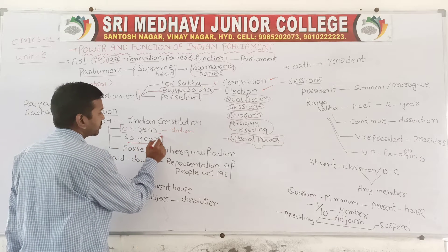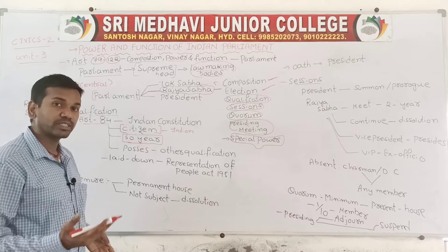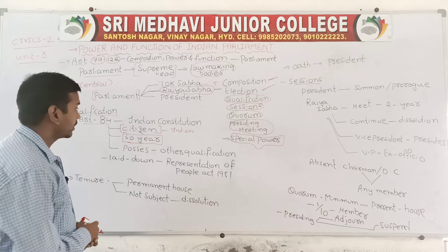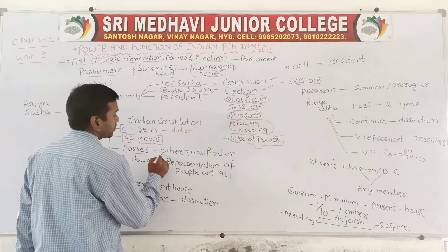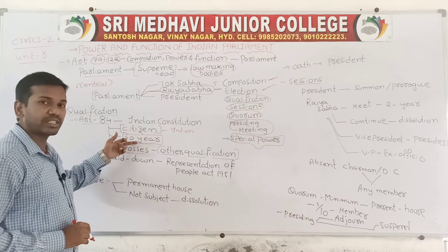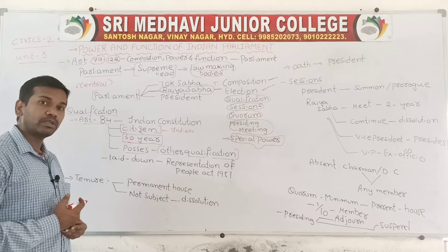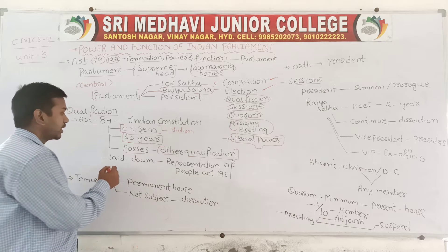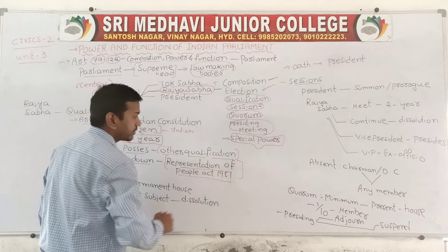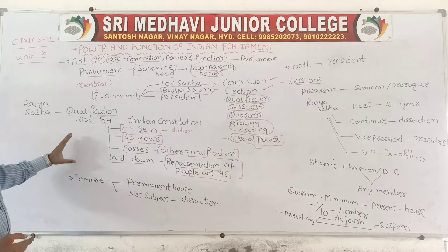Second, to become the member of Rajya Sabha you should be at least 30 years of age. To become the member of Lok Sabha it is 25 years, for Rajya Sabha it is 30 years, and for vice president it is 35 years. You should also possess all other qualifications required, as laid down according to the Representation of People Act 1951.